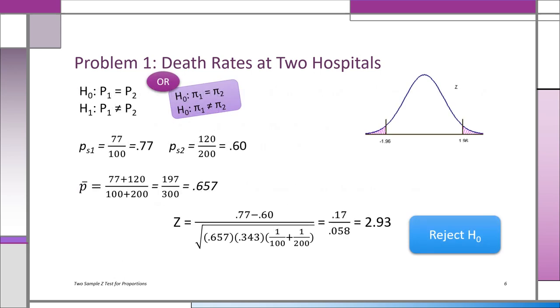Okay, now ready to do the problem. H0 is that there's no difference between the two proportions, which is like p1 equals p2, or if you wish, p1 minus p2 equals 0. And the alternative H1 is that p1 is not equal to p2.